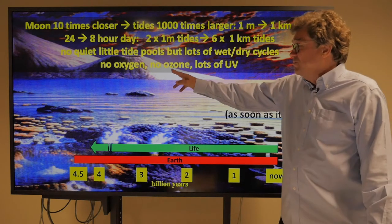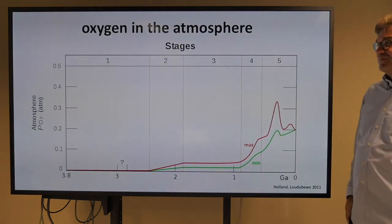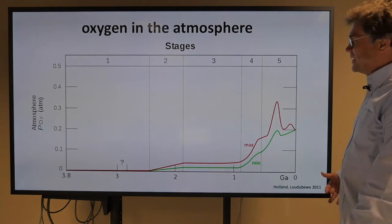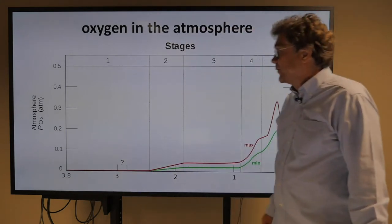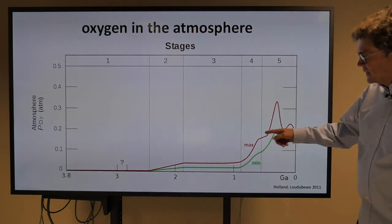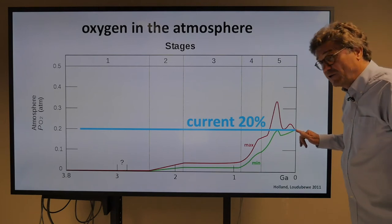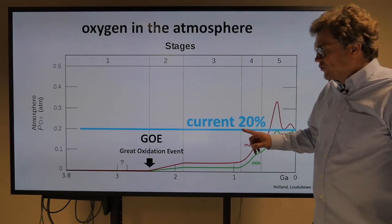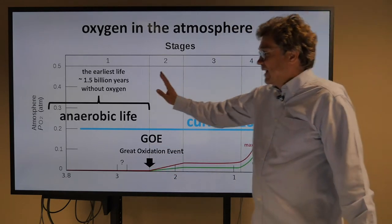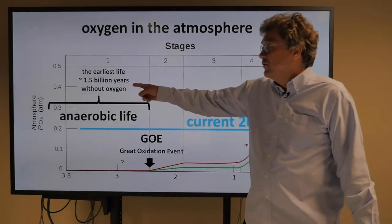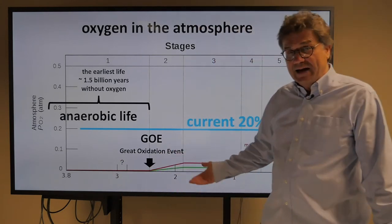There were no quiet little tide pools, but lots of wet-dry cycles because of six one-kilometer tides in a 24-hour period. Also, there was no oxygen, no ozone, and lots of UV, because ozone absorbs UV. The Great Oxidation Event happened about 2.5 billion years ago, and the earliest life existed for about 1.5 billion years without oxygen. So the earliest life forms are anaerobic — that we're very sure of.